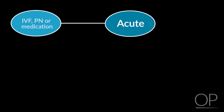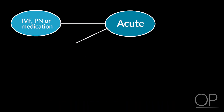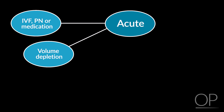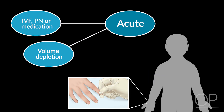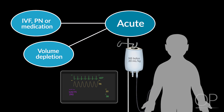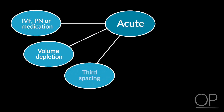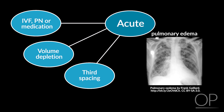If there's concern for an IV fluid, parenteral nutrition, or medication side effect, stop it and call the pharmacy. If the patient appears to have volume depletion — recent history of vomiting or diarrhea, or exam findings of tachycardia, hypotension, or delayed capillary refill — give a normal saline bolus of 20 cc per kilogram over 20 minutes and monitor for improvement in vital signs. If there's evidence of third spacing, consider how much excess fluid the patient is carrying and where it is. If respiratory rate is increased and oxygen saturation is decreased, worry about pulmonary edema or pleural effusions.